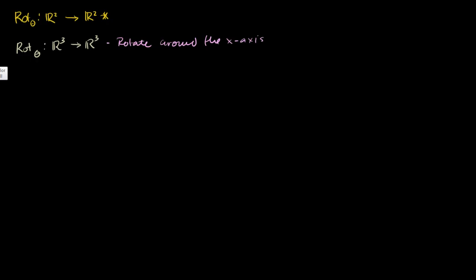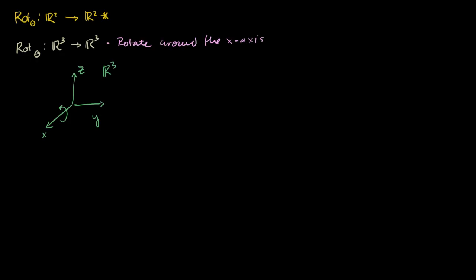Let me draw some axes. That's my x-axis, that is my y-axis, and this is my z-axis. Any vector here in R3, I will be rotating it counterclockwise around the x-axis. I'm drawing it in the zy-plane because it's a little bit easier to visualize. If I have a vector sitting here in the zy-plane, it will still stay in the zy-plane, but it'll be rotated counterclockwise by an angle of theta.